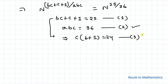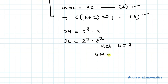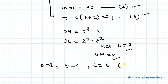By noticing equations 2 and 3, we can say that (b plus 1) must be a factor of 24, while b must be a factor of 36. By prime factorization, 24 equals 2 cubed times 3, and 36 equals 2 squared times 3 squared. Assuming b equals 3, then b plus 1 equals 4, and both 3 and 4 are factors of 36 and 24 respectively. So b equals 3, c equals 6, and a equals 2.